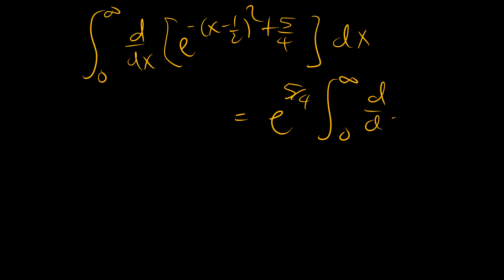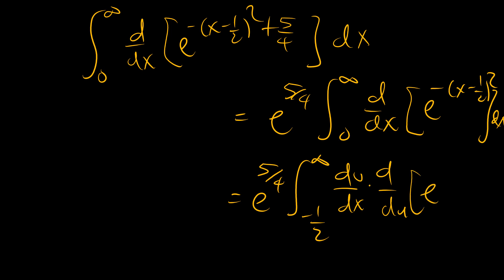So our integral, 0 to infinity dx, e negative x minus a half squared plus 5 over 4. So we can pull this out, we can pull this out, so that we have e to the power of 5 over 4, 0 to dx. Which is the same as, we're now in the u domain, and dx is the same as du/dx du, so that this constant we still have dx. And then this is negative u squared and du, and we saw that du/dx is 1.